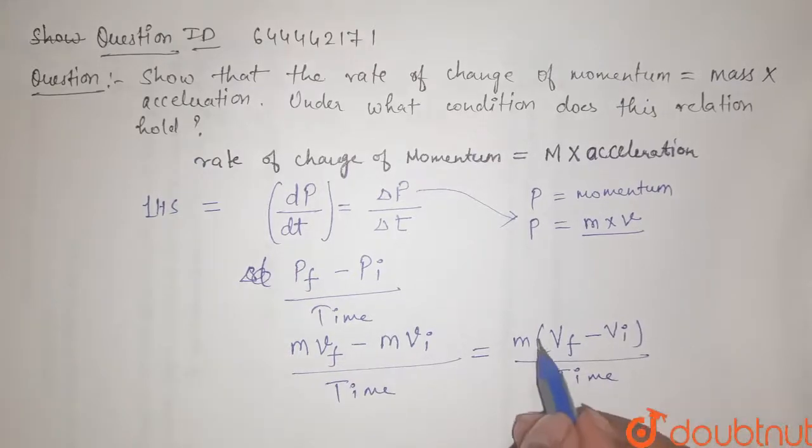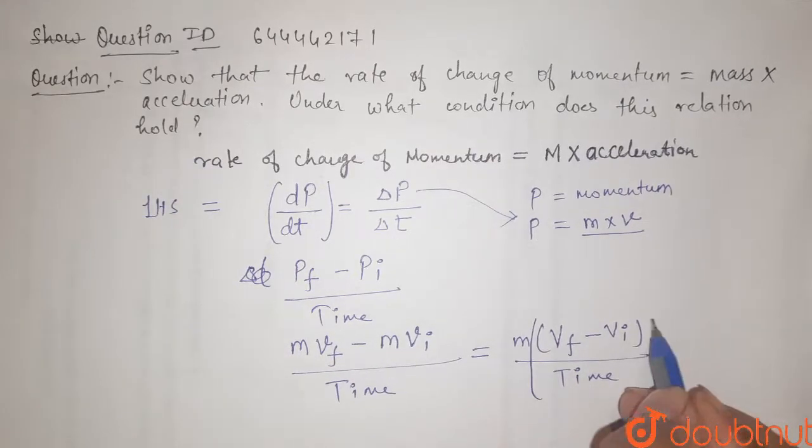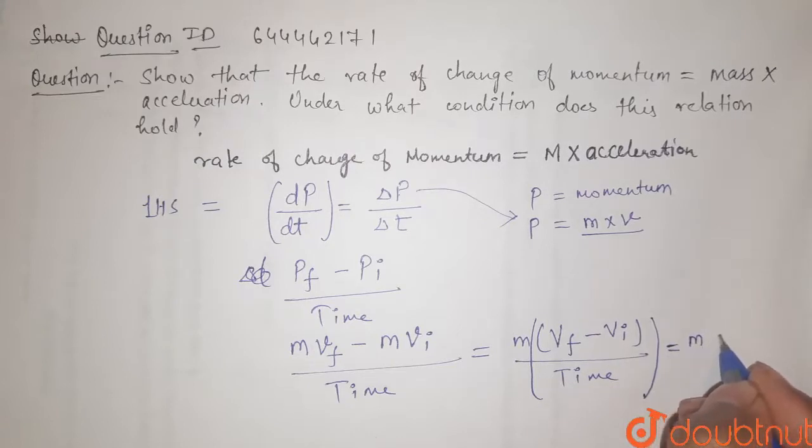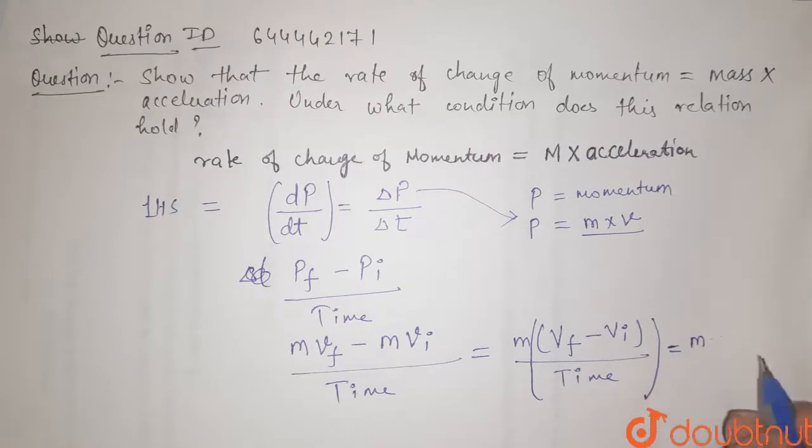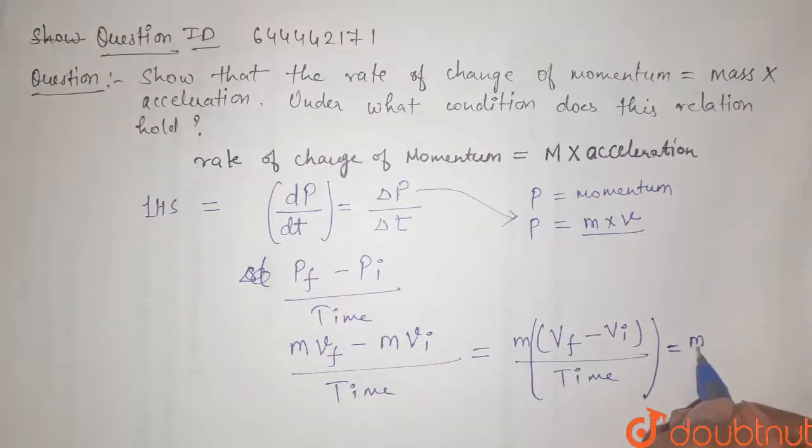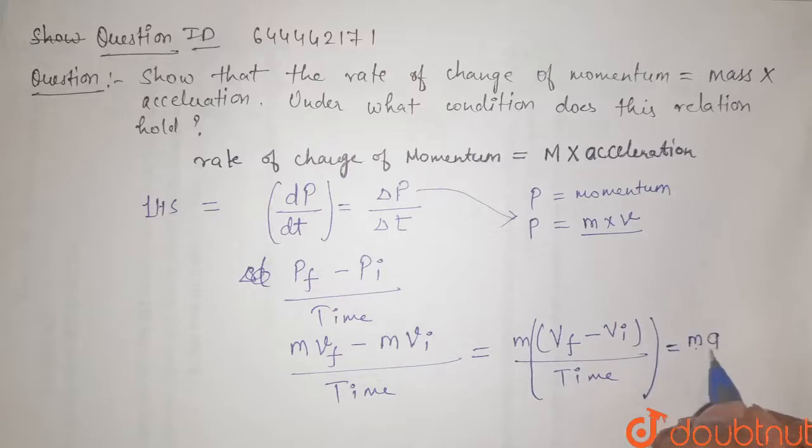So here we have v final minus v initial. This is what? This is the acceleration. So here we get that the rate of change of momentum equals mass into acceleration.